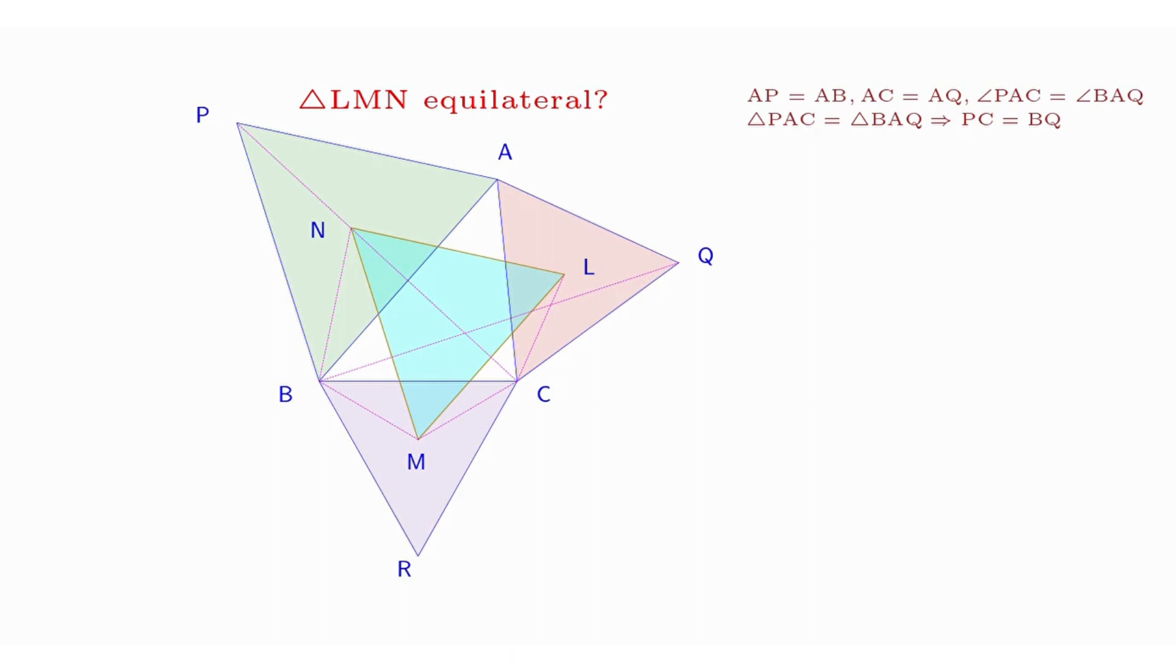Similarly, AC equals AQ. Also, angle PAC equals angle BAQ because they both equal angle BAC plus 60 degrees. Consequently, triangles PAC and BAQ are congruent. Therefore, PC equals BQ.